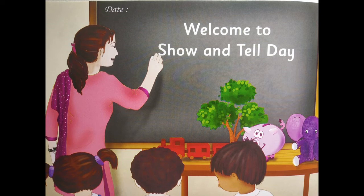Next question: what are the things on the table? We can see there is a table and some things are kept on it. I can see a tree, a red-colored train, a pig, and a purple elephant on the table.